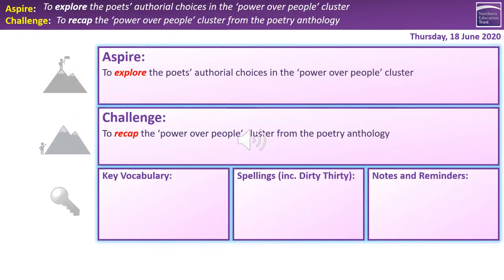Now the overview for today's session. A bit like last time with the society cluster, today we're looking at the power over people cluster. The challenge is to recap the power over people cluster, draw together those ideas, and get some familiarity with the poems back in place. Hopefully many of you will also push to the Aspire outcome, which is to explore the poets' authorial choices in the power over people cluster.